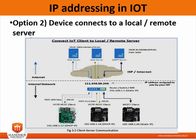Option 2 is to connect the device to a local or remote server. In this scenario, the IoT device initiates the connection to a local or remote server. This could be using HTTP REST POST or a configured MQTT client, or even a custom connection method.